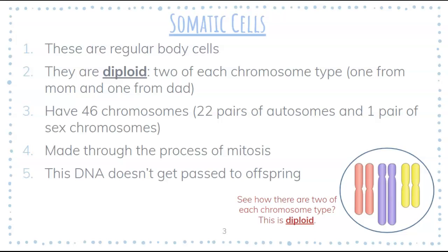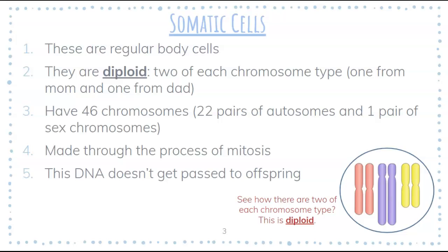So at the end of mitosis, the point is we want two identical daughter cells with two identical nuclei with identical DNA inside. A somatic cell is just a name for a regular old body cell — it could be lungs, skin, heart, eyes, whatever. And we've got some vocabulary here. They're called diploid, which means we have two of each chromosome type, one from mom and one from dad. So if you look in the lower right-hand corner, we have two pink chromosomes, two purple, and two yellow — two of each color. That's diploid. In your cells, you have 23 different types of chromosomes, so you would have 23 pairs.